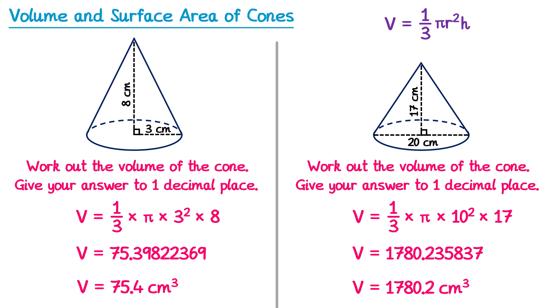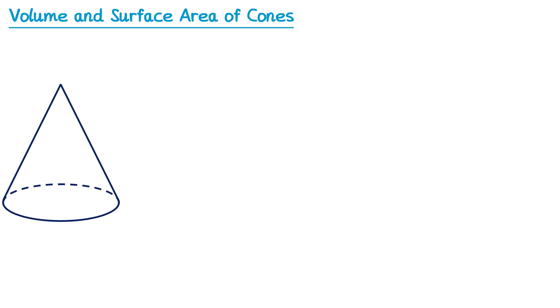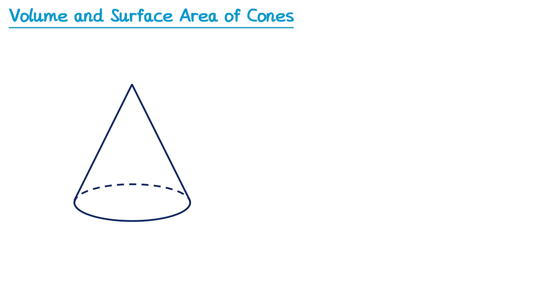So that's volume covered — now let's look at surface area. Before we do, we need to understand one more length on a cone. So far we've worked with the radius and the perpendicular height h. We also need to know about the height that goes on a slope — we call it the slant height, and we give it the letter L.